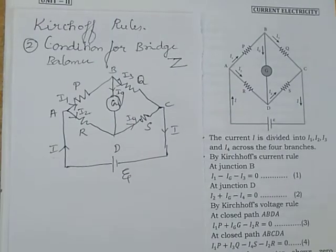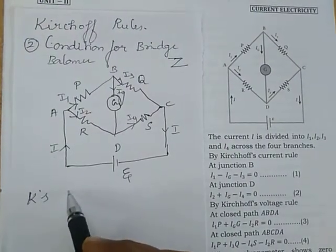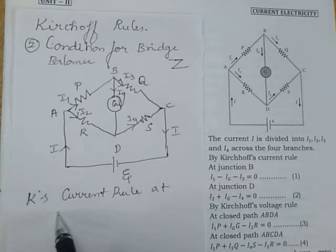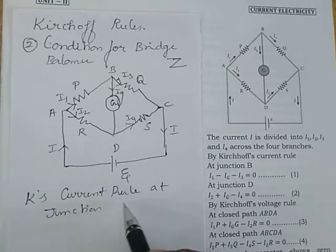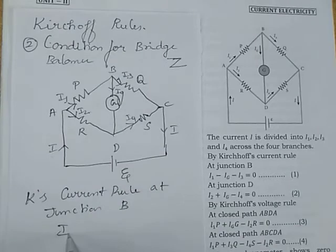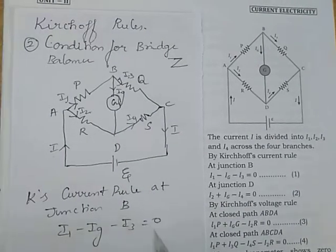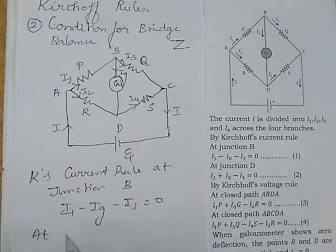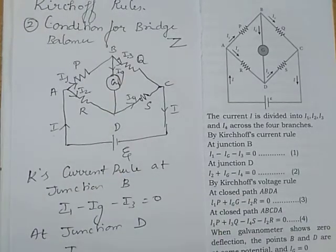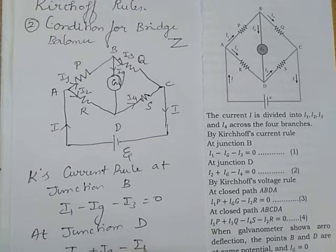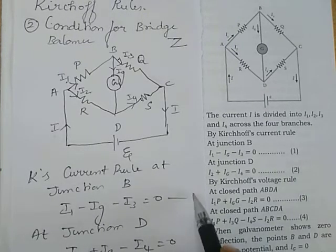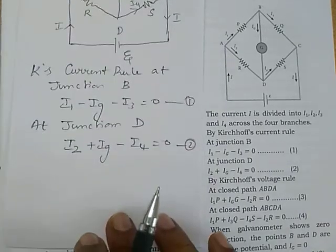Applying Kirchhoff's Current Rule at junction B: I₁ enters; I₃ and Iɢ leave. So: I₁ − Iɢ − I₃ = 0 (equation 1). At junction D: I₂ and Iɢ enter; I₄ leaves. So: I₂ + Iɢ − I₄ = 0 (equation 2).